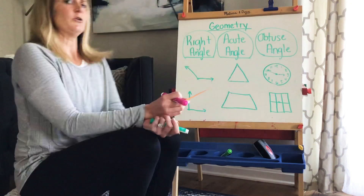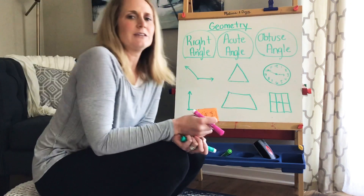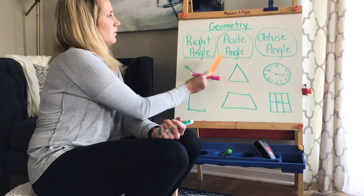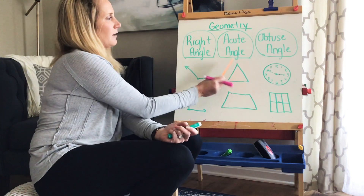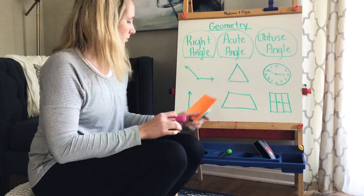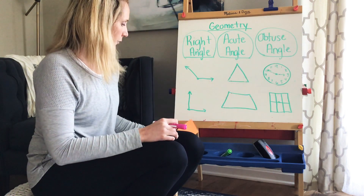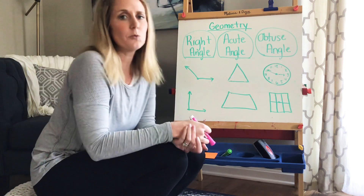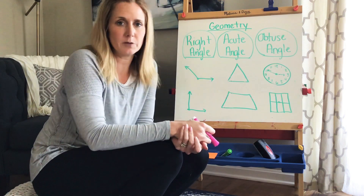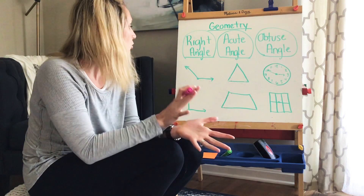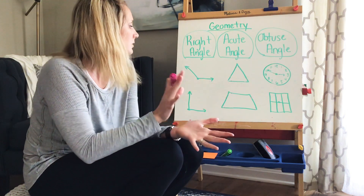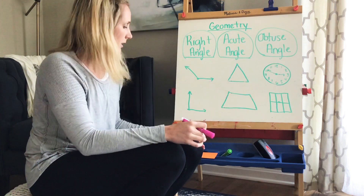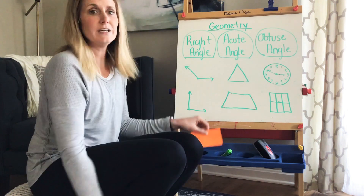Hey guys, so we learned about the right angle, acute angle, and obtuse angle right before this, and we're going to do a little practice with identifying right angles, acute angles, and obtuse angles. Now if you have an index card at your house, I want you to make a right angle finder.